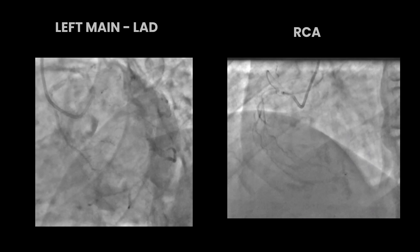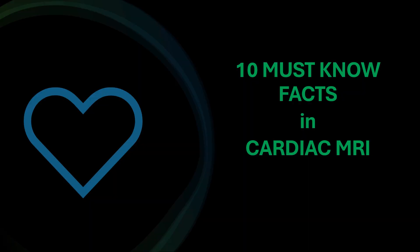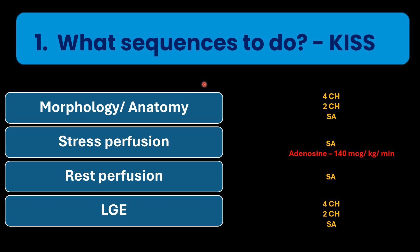In this patient, the inferior segments of the heart are supplied by the LCX rather than the RCA territory. A few important things to know in cardiac MRI: first, what sequences to do. Keep it simple and short — we do only four sets of images. One is morphology/anatomy: the four-chamber, two-chamber, and short axis views, which help identify the morphology and anatomy.